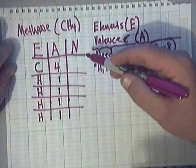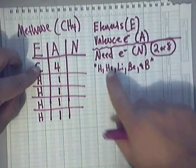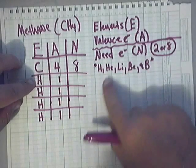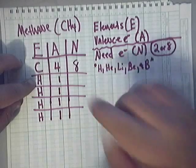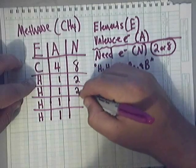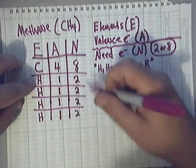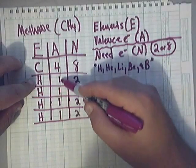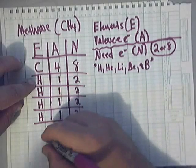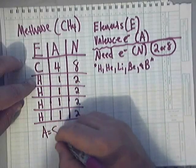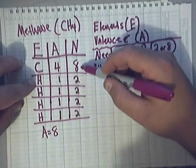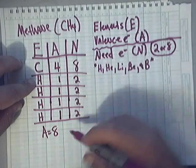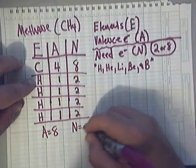Now we have the need amount. Carbon is not one of these five elements, so it will need eight. Hydrogen is one of those five elements, so it will need two. After this, you're going to add these up. Total available, we have four, five, six, seven, eight. We've got eight. So A is equal to eight. The need amount, we've got two, four, six, eight. We've got eight plus eight, which is 16. So that need amount is 16.